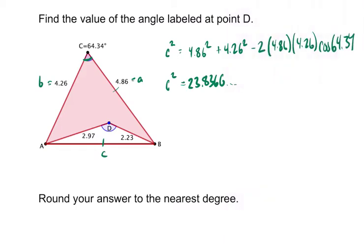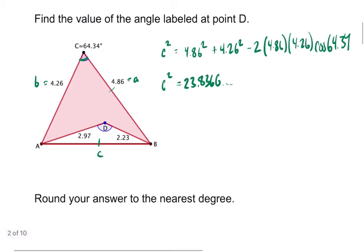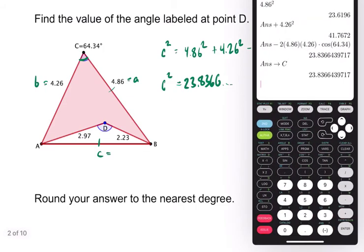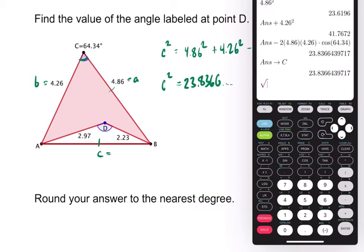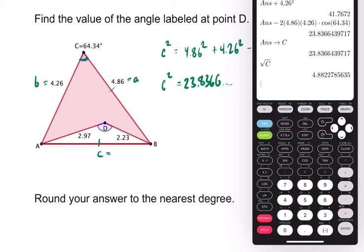And what that will allow me to do is now we know that we can find the length of C. And let's just find it. Why not? So the square root of this number, which I realize now might be confusing, I call it C, is 4.88. So this is about, let's just get that as a reference, 4.88.